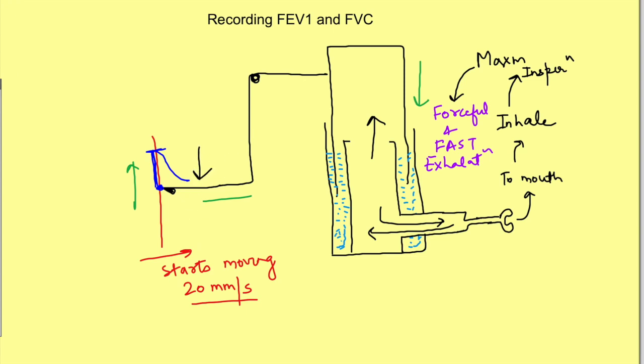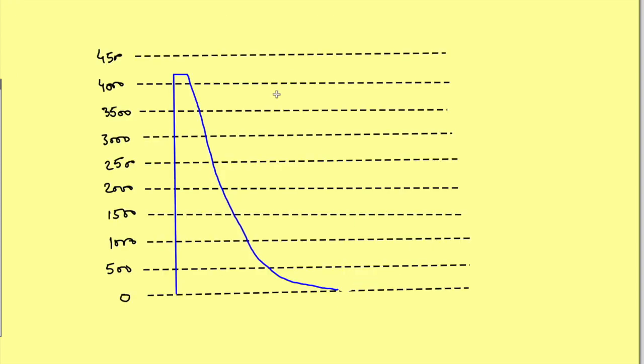For complete evaluation of FEV1 and FVC, it's important to continue recording until they finish exhaling or for a maximum of 6 seconds. With the graph obtained, we determine FEV1 by FVC ratio. The total volume exhaled is the forced vital capacity - the amount of air that can be exhaled forcefully after maximum inspiration.